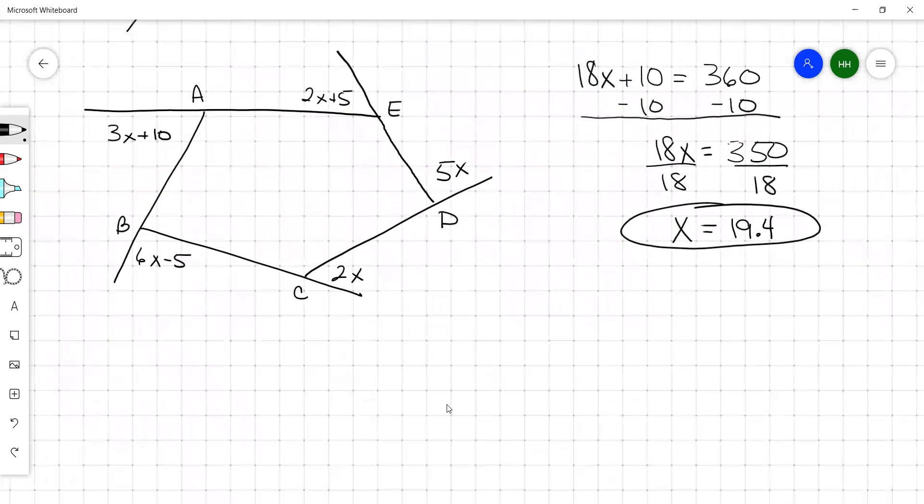And then you guys know now how to find out each exterior angle, the measure. I'm going to call this the exterior angle at vertex A. That's going to be 3 times 19.4 plus 10. So 3 times 19.4 equals 58.2 plus 10, 68.2.